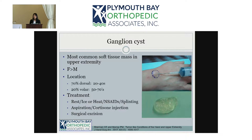With aspiration, as depicted in the picture here, you do need a large bore needle because it is really thick, viscous fluid inside. Even though it seems like a water balloon of fluid, it's not really like water — it's more like hair gel, it's really thick. With aspiration and cortisone injection, the recurrence rate is approximately 60 to 70 percent.